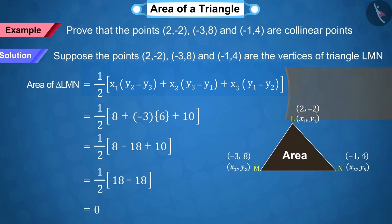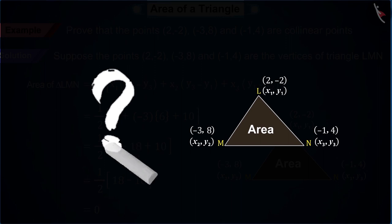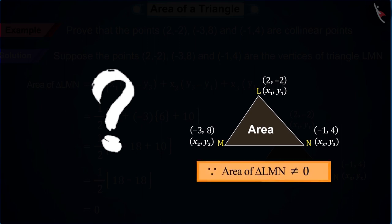We get the area of triangle LMN as 0. Can area of any triangle be 0? No, the area of any closed figure cannot be 0. And if the area is 0, then we can say that it does not become a figure.